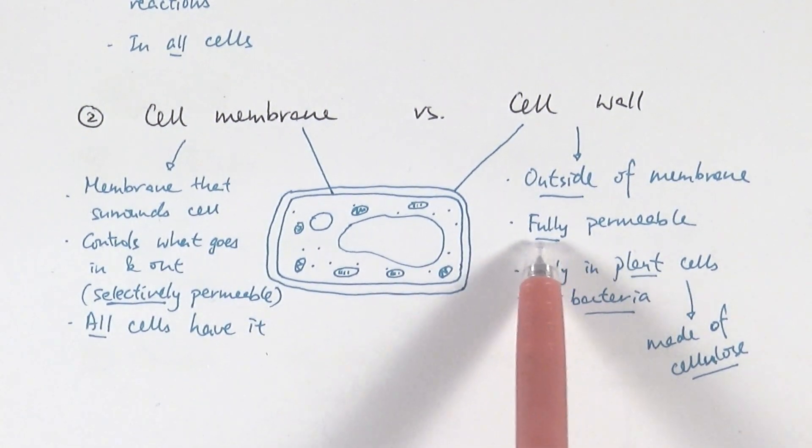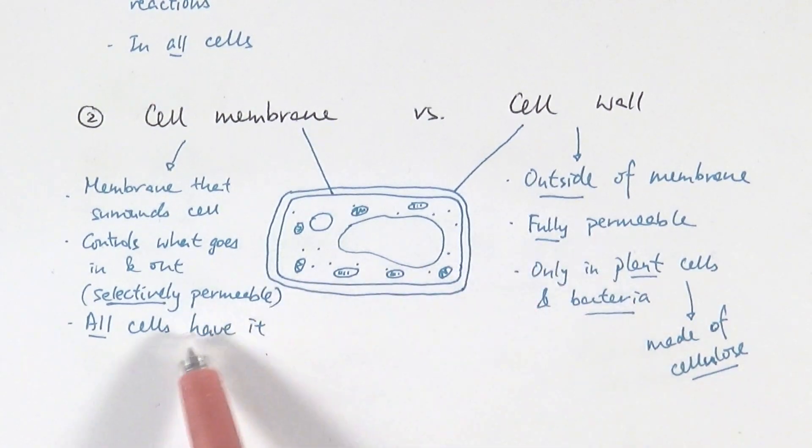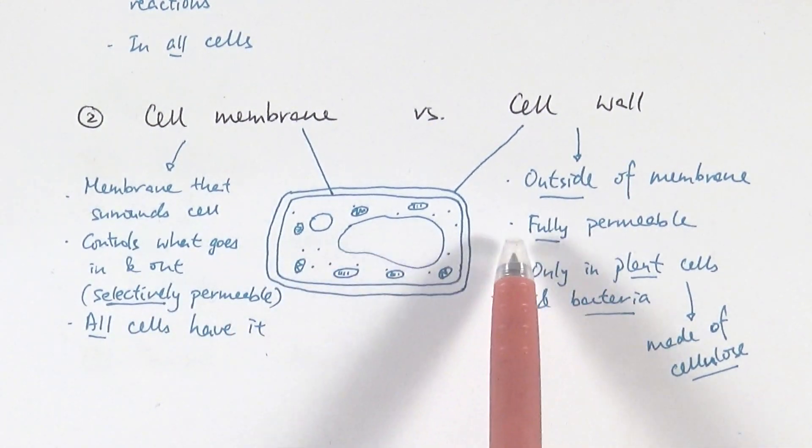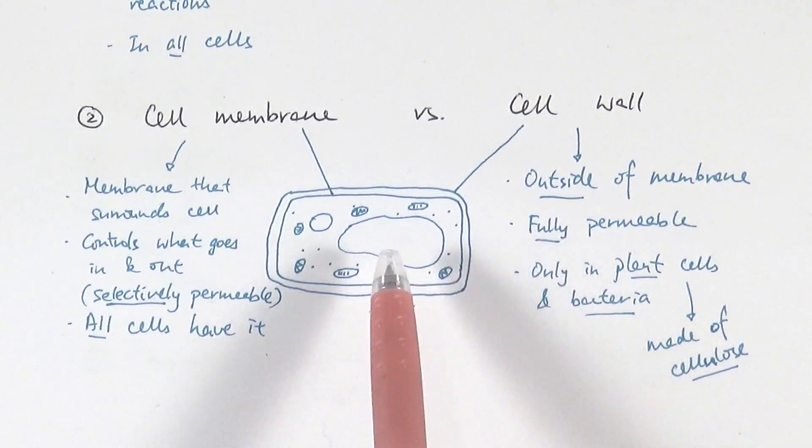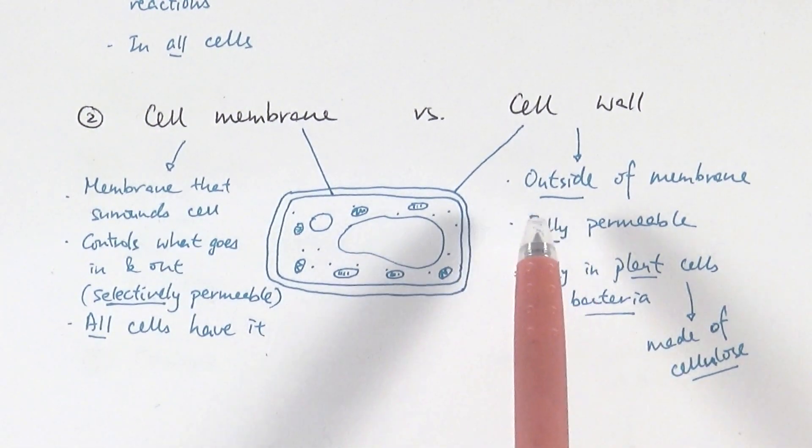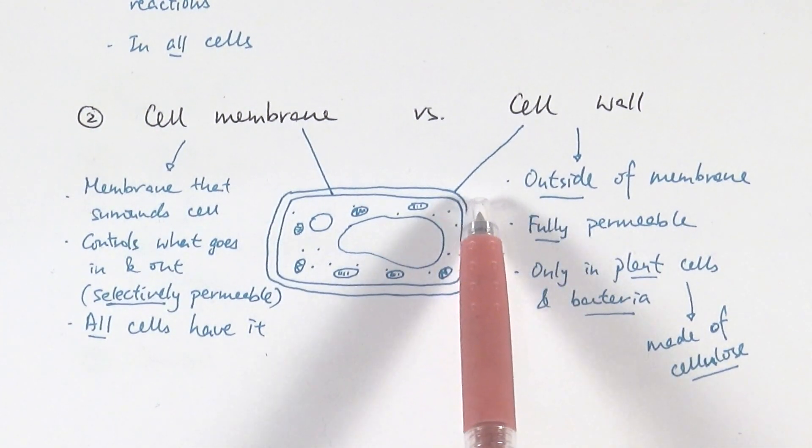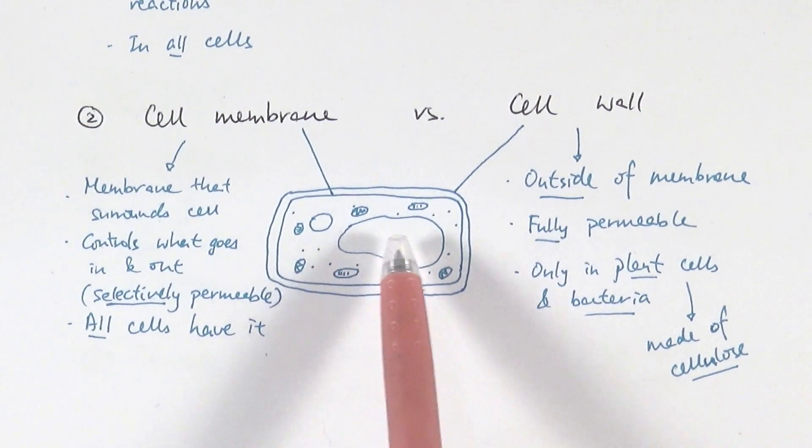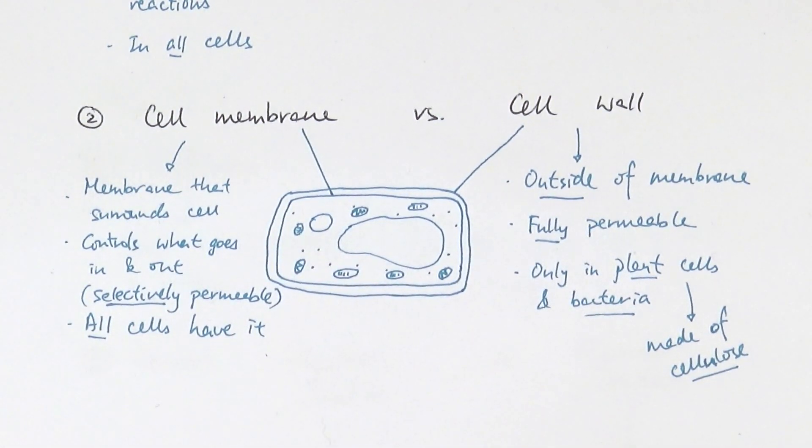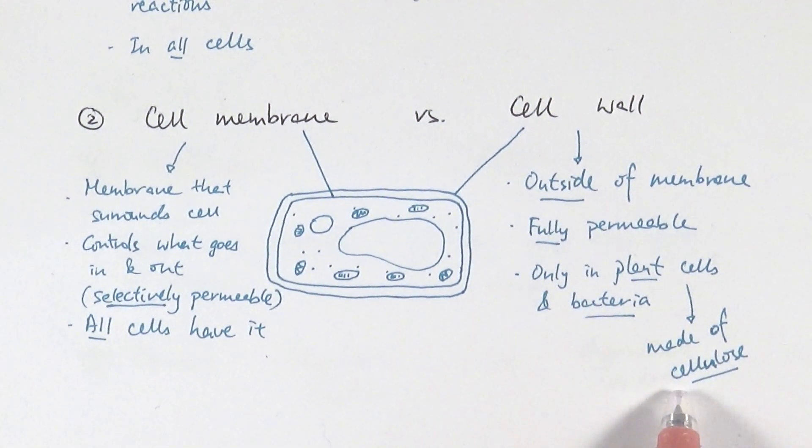The other difference is that they are fully permeable, so they're not selectively permeable. Anything can go through the cell wall, but in most cases even though toxins for example can go through the cell wall, they would not be allowed to go through the cell membrane into the cell.